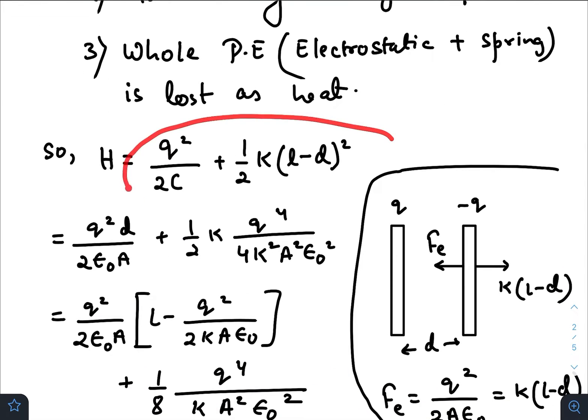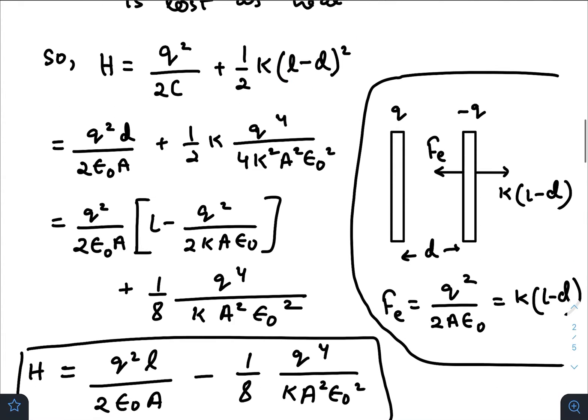The heat - the energy that was present inside the capacitor was Q²/2C and the energy stored inside the spring would be (1/2)K times the compression of the spring squared.